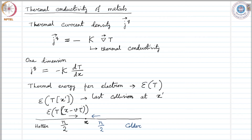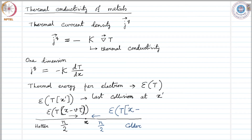Here, x is the coordinate of this point, v is the speed of this electron, and tau is the relaxation time — the mean free time. We are saying that on average the electron was at location x minus v·tau when it had its last collision. So the thermal energy of this electron on average would be epsilon at temperature for the location x minus v·tau. For the electrons coming from the colder side, their energy would be epsilon of T at x plus v·tau.